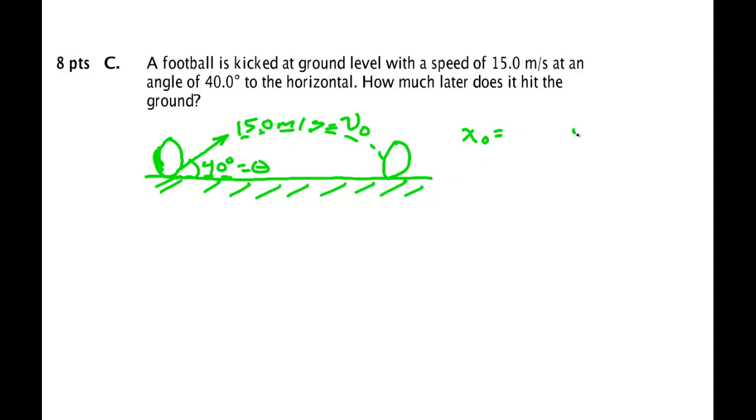We fill out our chart. X equal, Y equal, V X not equal, V X equal, V Y not equal, V Y equal. A X equals zero meters per second squared. A Y equal minus G. V not is 15 meters per second. Theta is 40 degrees. T is unknown. We have an axis as always.